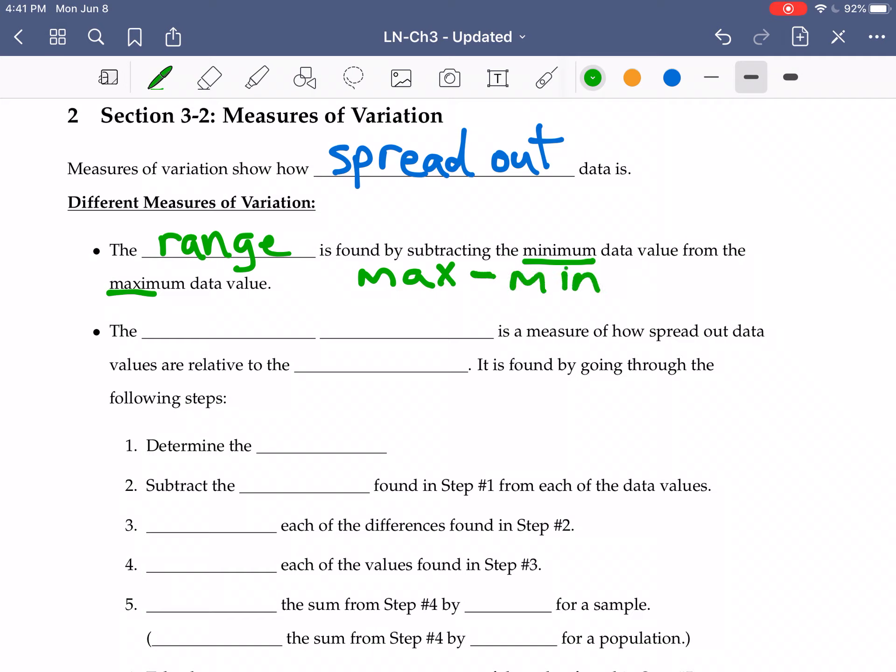That is a minus sign, it's not a dash. A lot of times in everyday speech, we might say something ranges from this value to this value. Here, when we talk about the range statistically, we are talking about a number that represents the difference between the largest value and smallest value. So we're taking the maximum value, subtracting the minimum value from that. The units on the range are the same as the units on the data set itself.